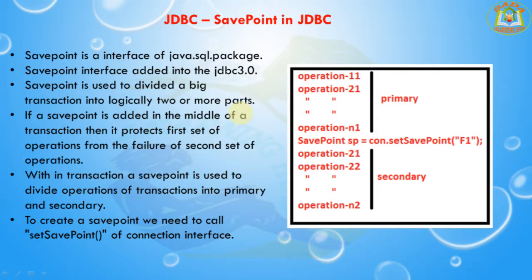To eliminate this problem we can use SavePoint. After completing the first set of transactions, we can set a SavePoint. If the second transaction fails, it rolls back only the second transaction, and the first transaction's changes are committed into the database.